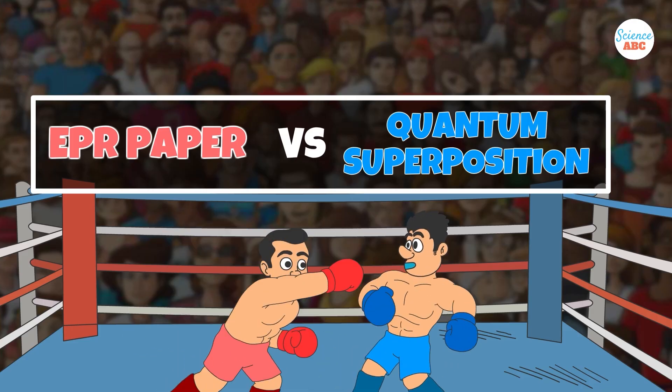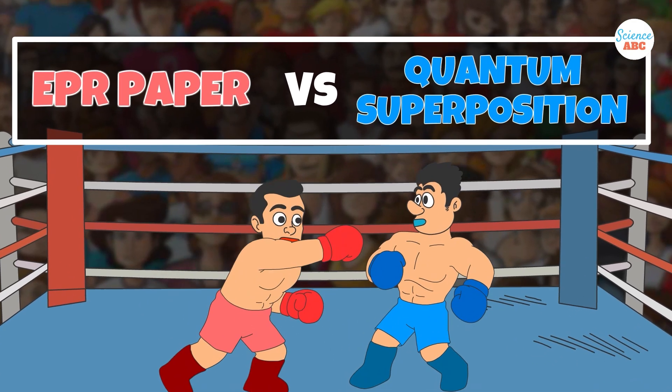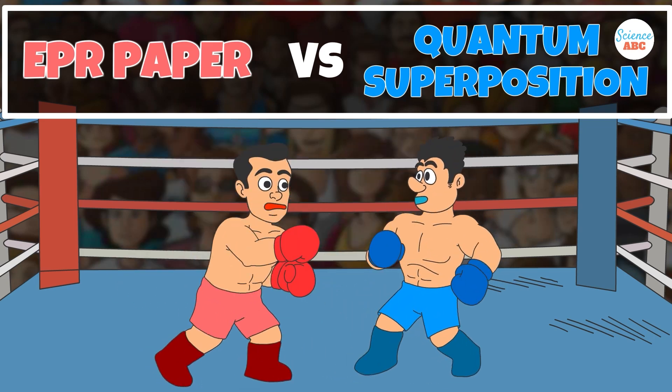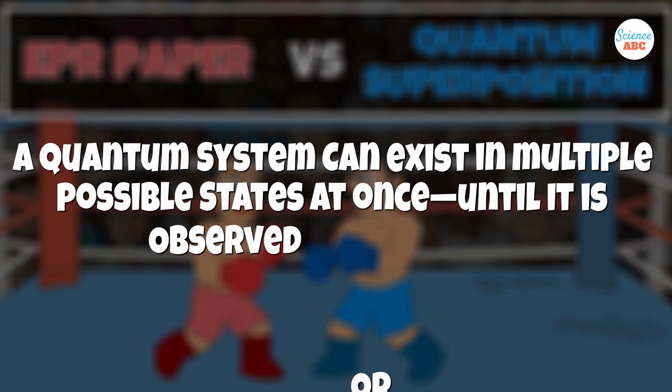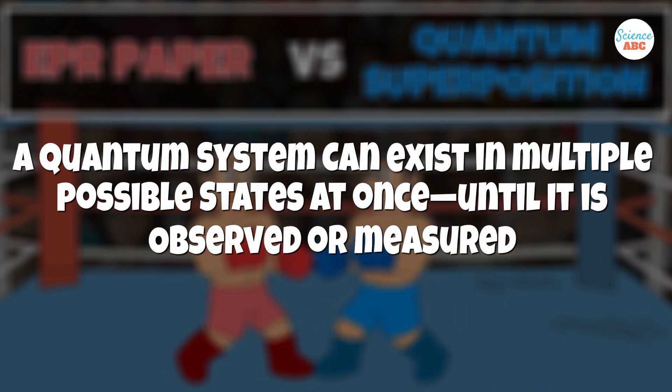The EPR paper challenged the idea of quantum superposition, a foundational concept in quantum theory. Superposition suggests that a quantum system can exist in multiple possible states simultaneously, until it's observed or measured.